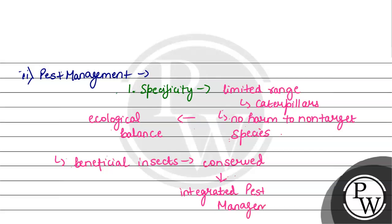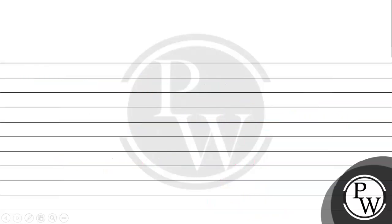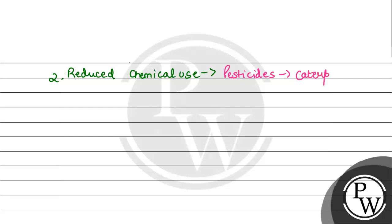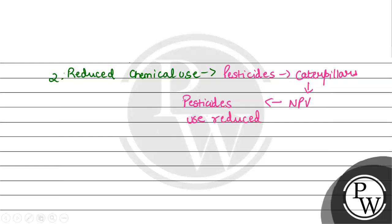This is our primary reason to choose NPV. Moving to the next point — other than specificity, NPVs lead to reduced chemical use. Because we used to use pesticides for caterpillars, but now we can use NPV instead, so we don't have to use pesticides for caterpillars. Therefore, chemical use is reduced.